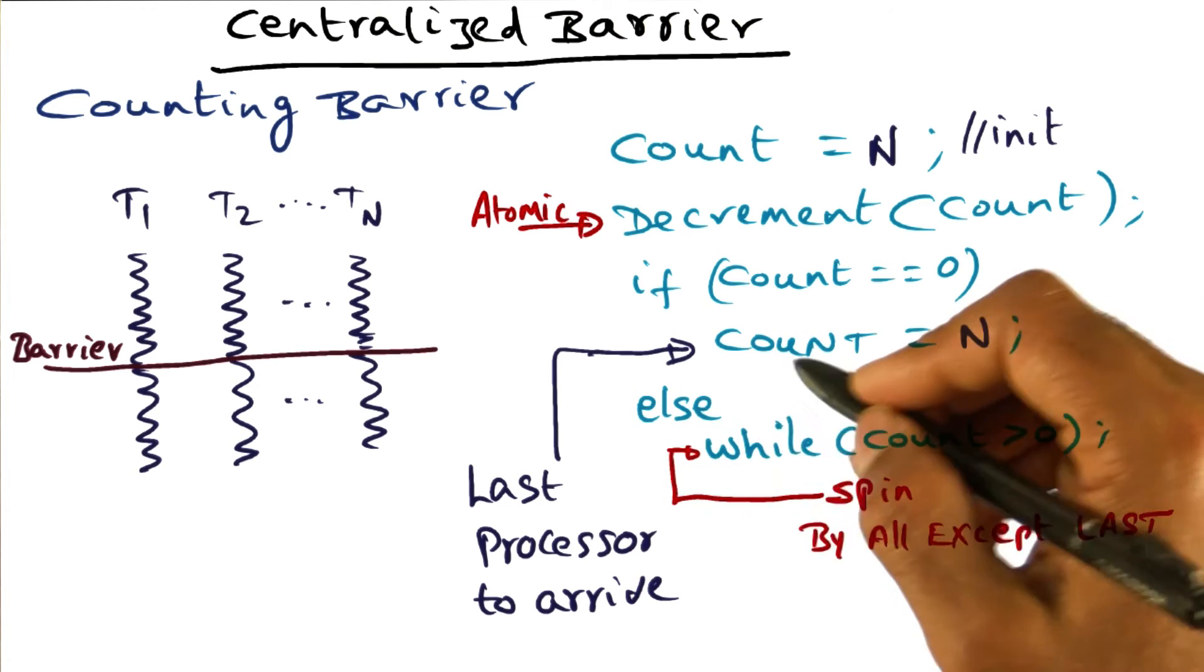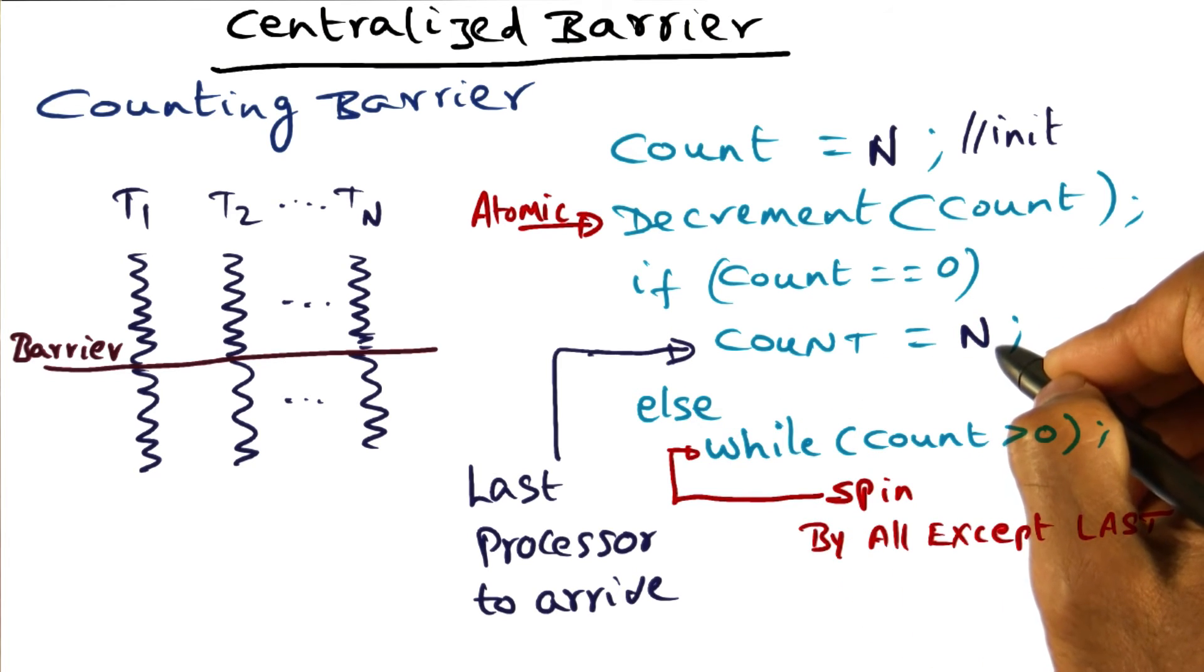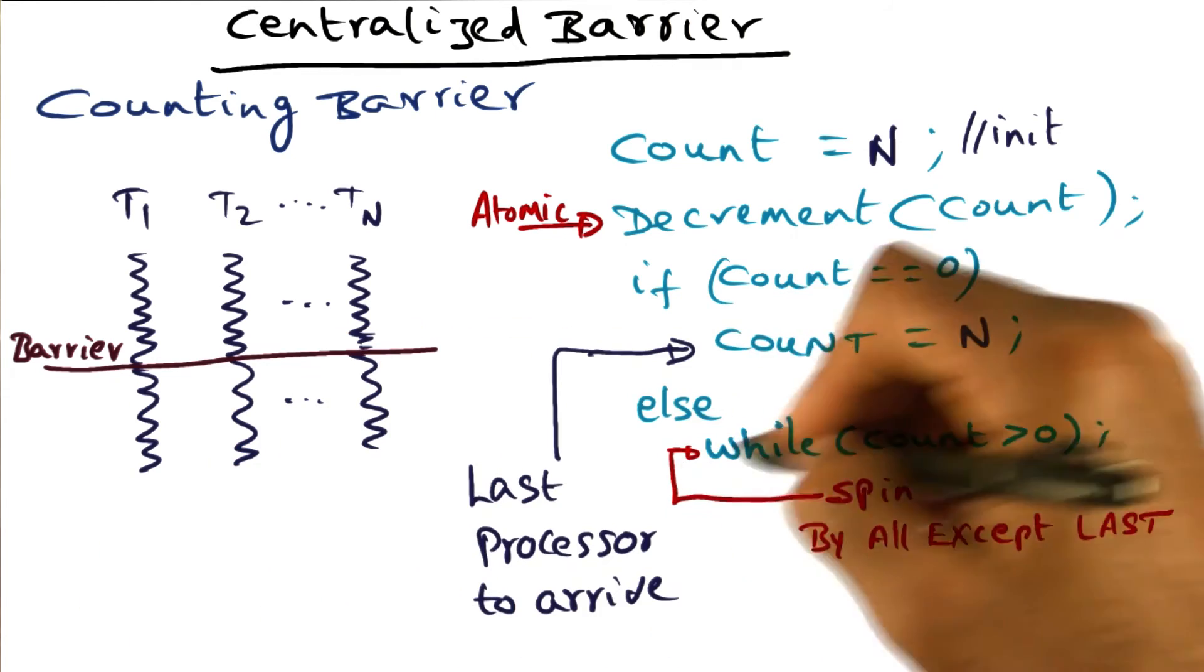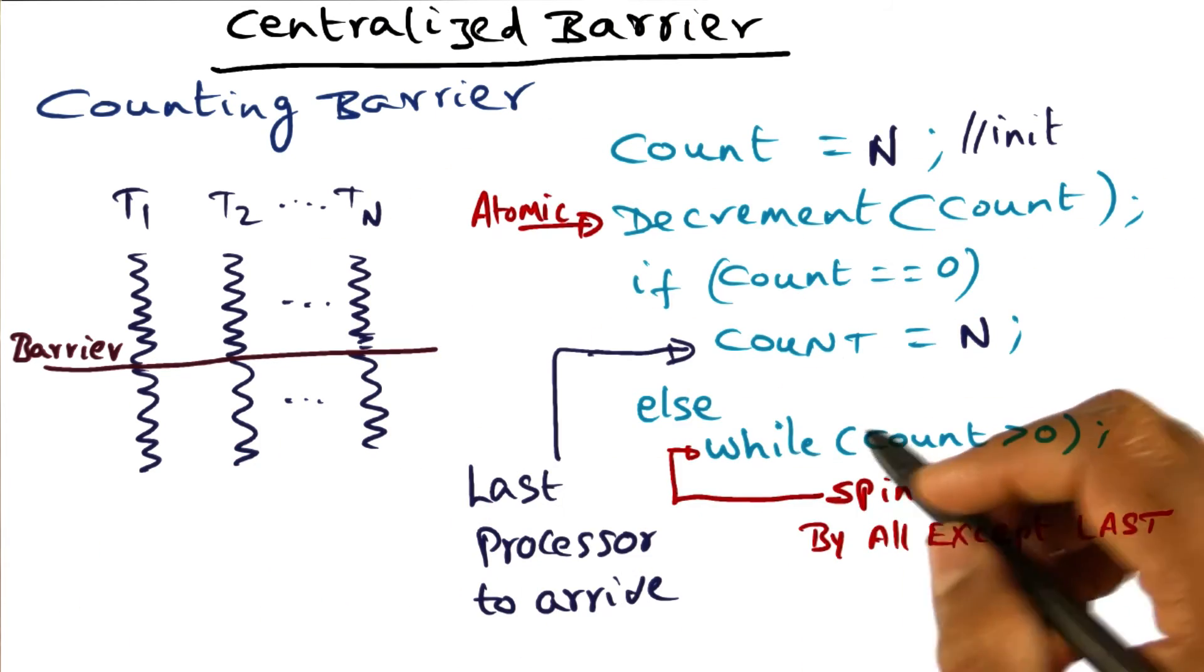The last processor to arrive is going to reset the count to N to indicate that when these guys go off, before they come to the next barrier, the count has to be N. That's the idea behind that.